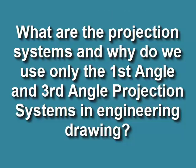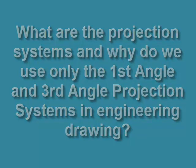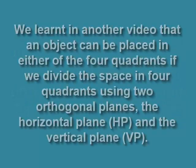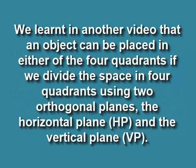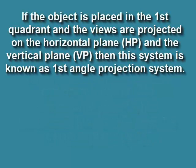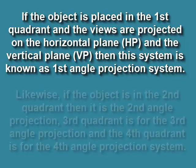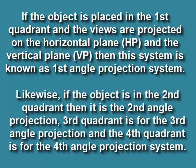What are the projection systems and why do we use only the first angle and third angle projection systems in engineering drawing? An object can be placed in either of the four quadrants if we divide the space using two orthogonal planes — the horizontal plane and the vertical plane. If the object is placed in the first quadrant and the views are projected on the horizontal plane and the vertical plane, then this system is known as first angle projection.